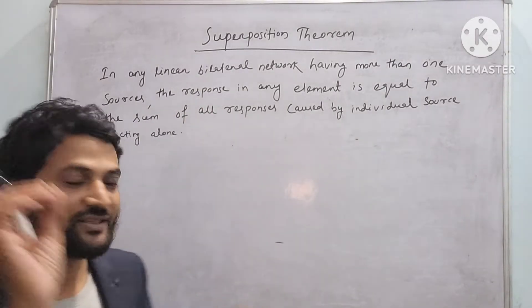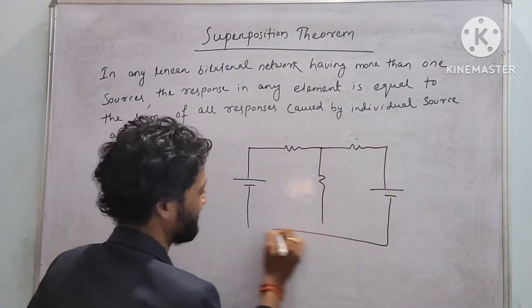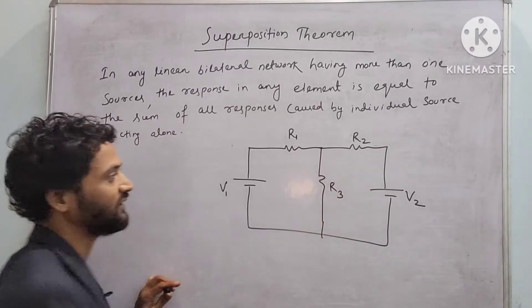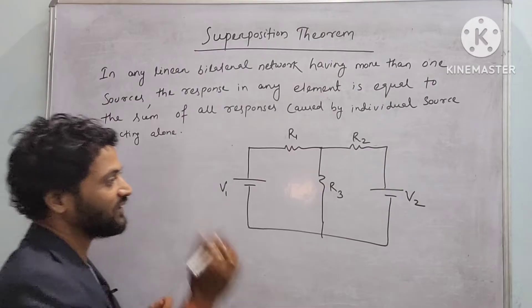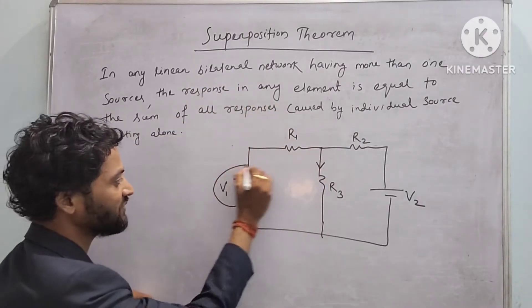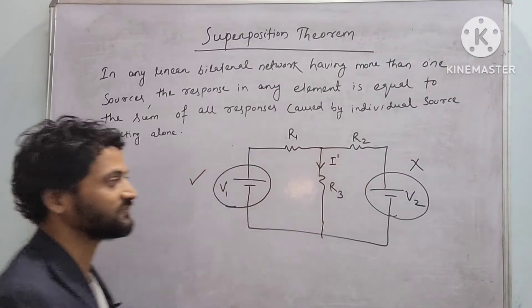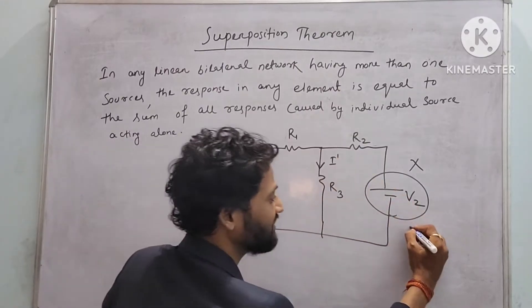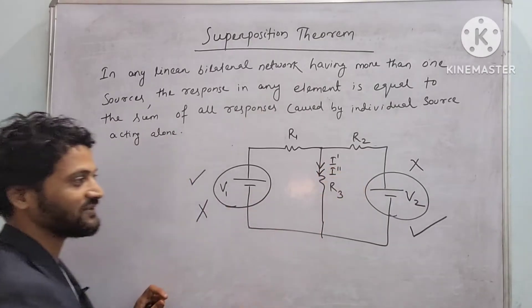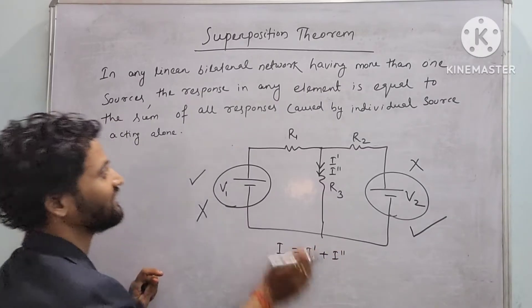Let us understand the concept by taking a small example. Let we have a circuit having two sources and three resistances — two sources V1 and V2, and resistances R1, R2, and R3. We will find out the current through the R3 resistor. We will activate the first source, deactivate the second, and find current I dash. Similarly, we activate the second source and deactivate the first to find I double dash. Then with both sources active, the net current is I dash plus I double dash.